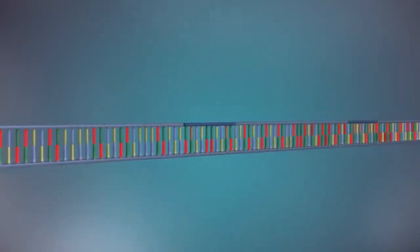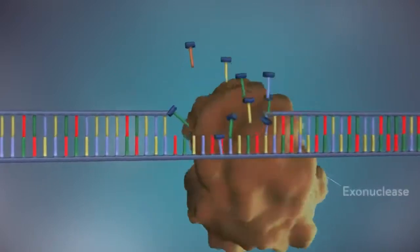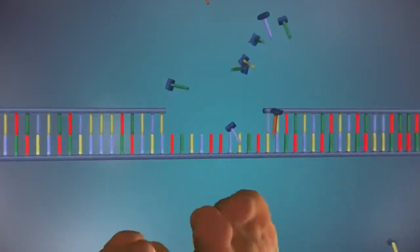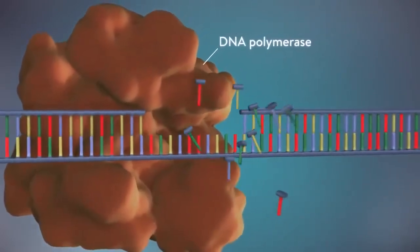Once the new DNA has been made, the enzyme exonuclease removes all the RNA primers from both strands of DNA. Another DNA polymerase enzyme then fills in the gaps that are left behind with DNA.